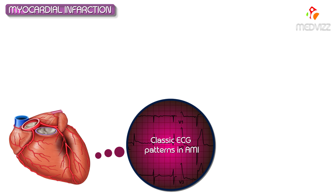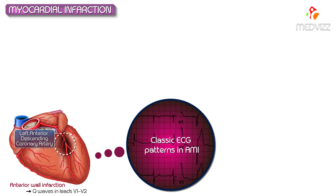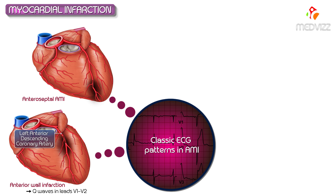Classic ECG patterns in acute myocardial infarction are important for MCQs. Thrombosis of the left anterior descending (LAD) coronary artery produces an anterior wall infarction, since the LAD supplies the anterior wall of the left ventricle — Q waves are seen in leads V1 to V2. Anteroseptal acute myocardial infarction is caused by thrombosis of the proximal LAD, with Q waves in leads V1, V2, and AVL.